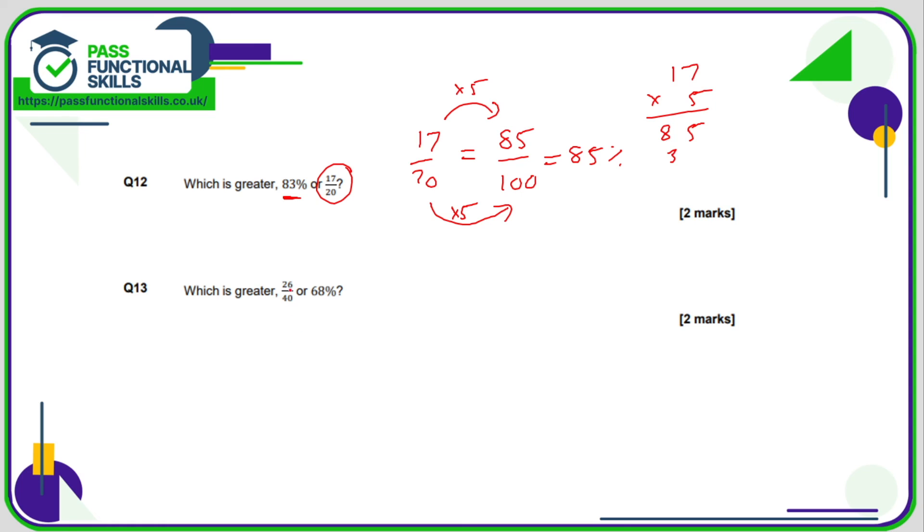Luckily we're able to use a calculator here. So what I'm going to do is simply convert 26 out of 40 into a percentage and remember that to convert a fraction into a percentage it's top divided by bottom multiplied by 100. So 26 divided by 40 times 100, that is 65% which is less than 68% so obviously 68% is greater.